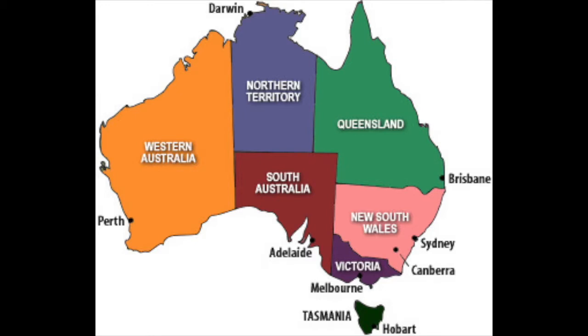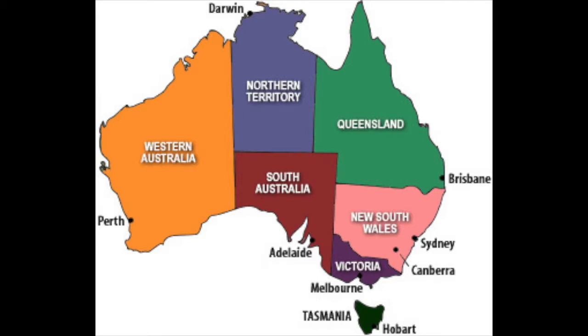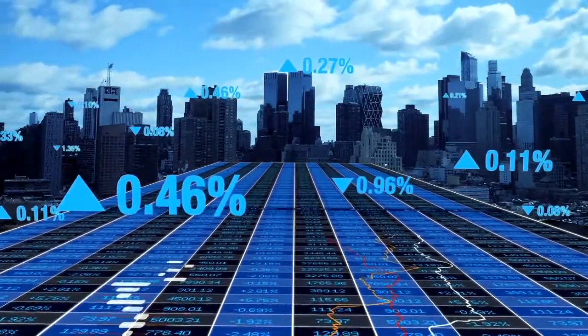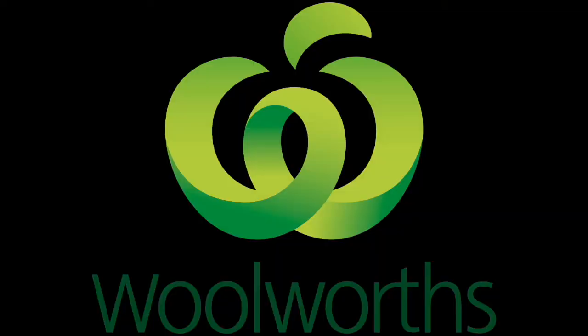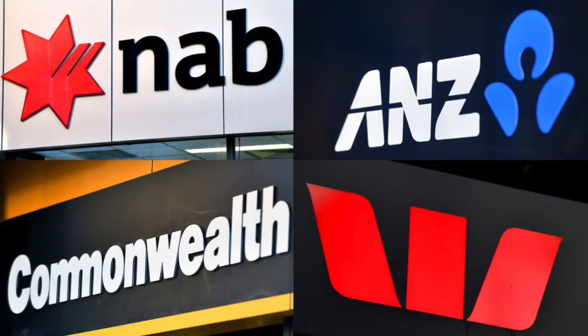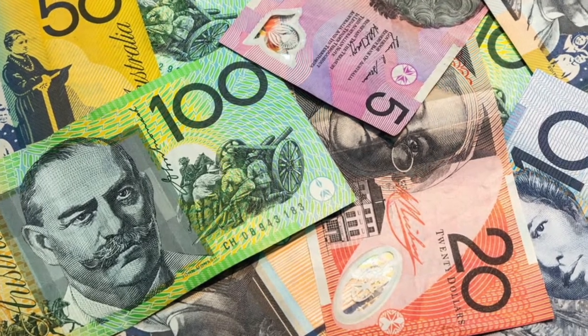There are currently over 2,000 companies listed, including the household names of Woolworths, Telstra, and the big four banks: Commonwealth Bank, ANZ, NAB, and Westpac. The ASX uses the Australian dollar as its currency.